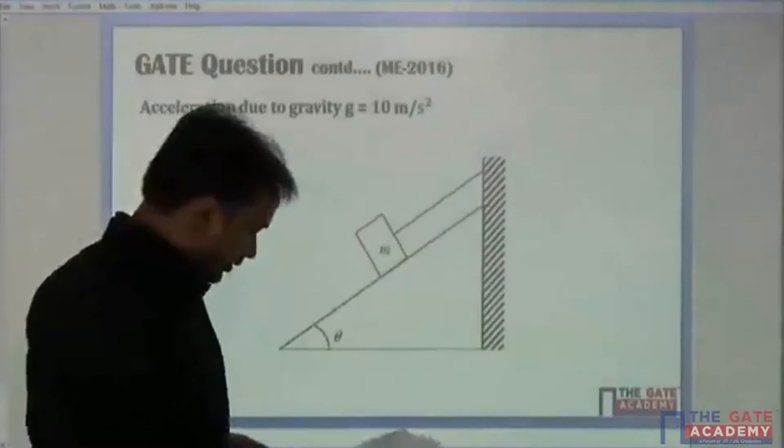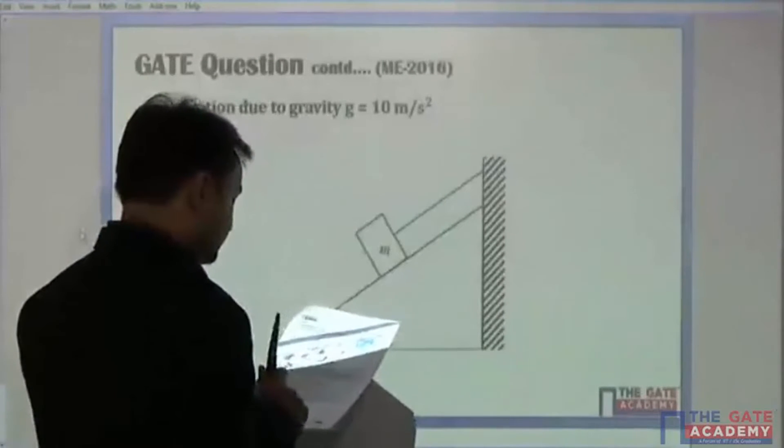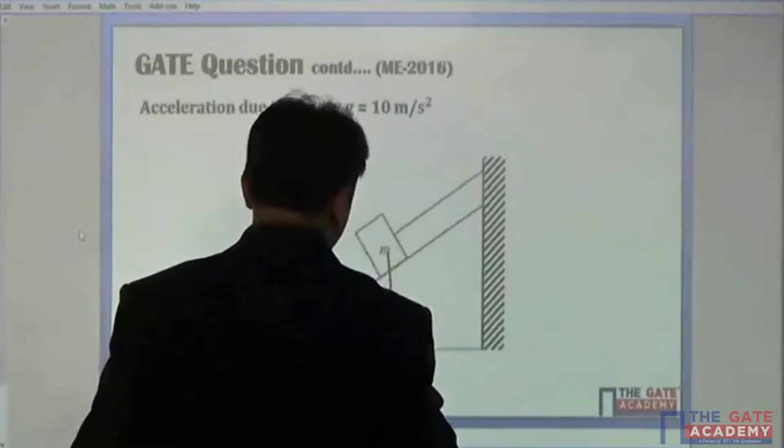So a block m, mass m rests on an inclined plane and is attached by a string to the wall. This is mg.